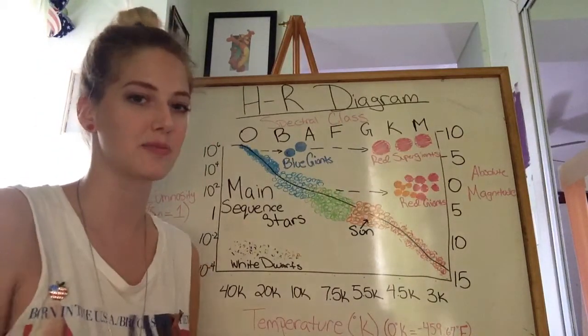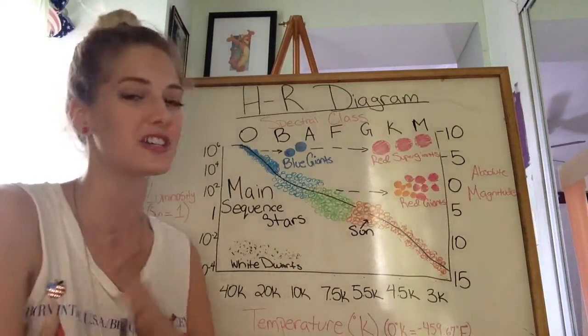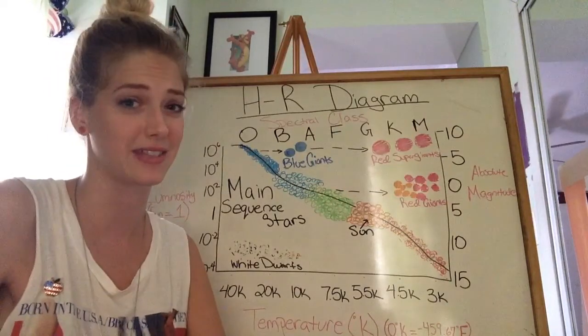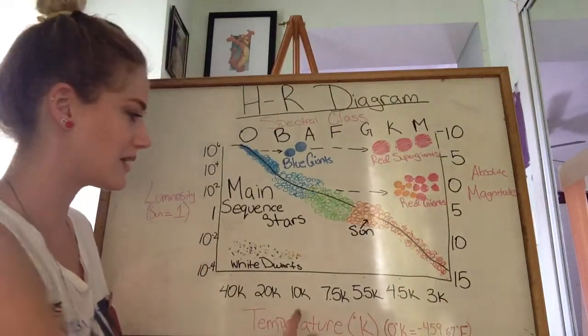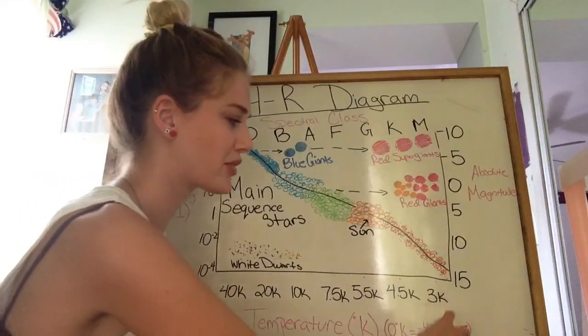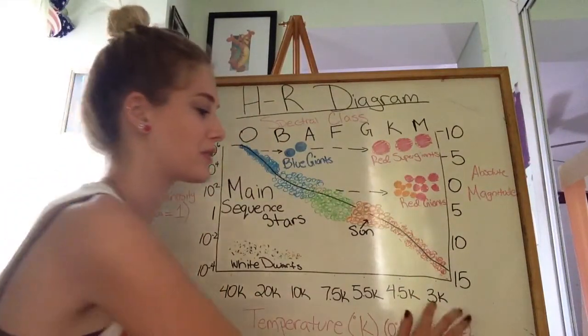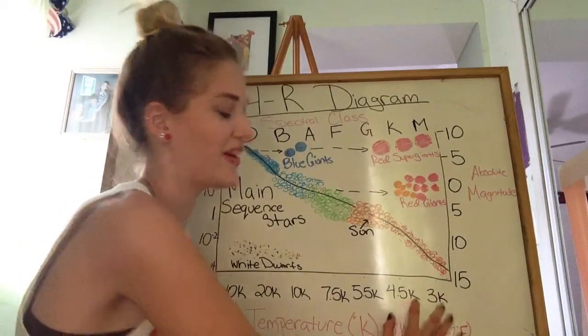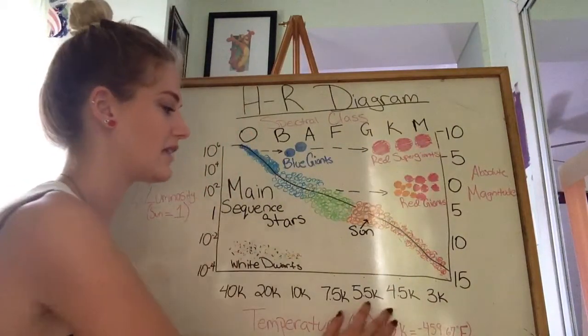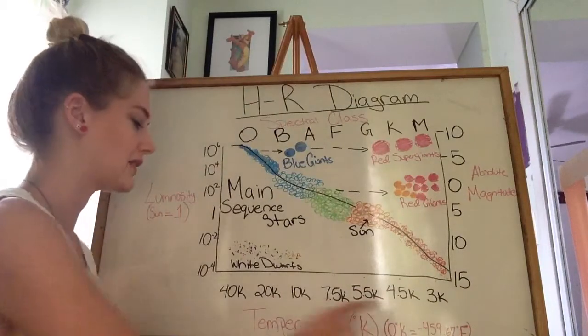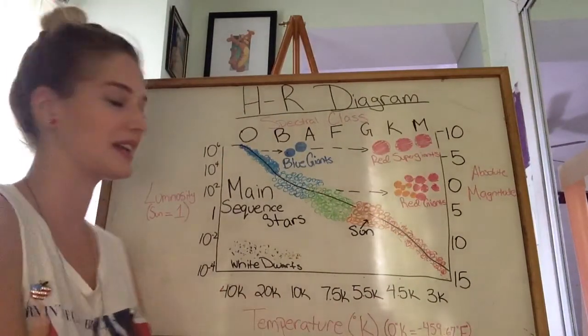Down here I have the temperature in degree Kelvin. Zero degrees Kelvin is approximately negative 459.67 degrees Fahrenheit. So down here I wrote 3K, that's 3,000 degrees Kelvin, 4.5K, so that's 4,500 degree Kelvin, 5,500 degree Kelvin, all the way up to 40,000 Kelvin.